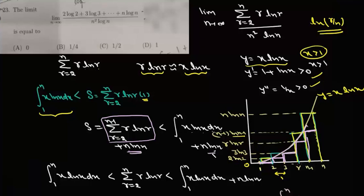Adding n·logn to both sides, we can write that the summation r from 2 to n of r·logr is greater than the integral from 1 to n of x·logx dx, and it is less than the integral from 1 to n of x·logx dx plus n·logn.